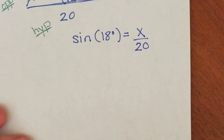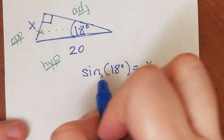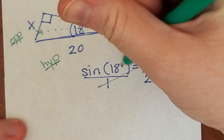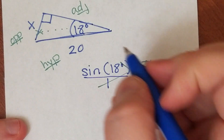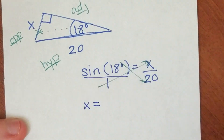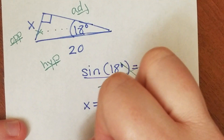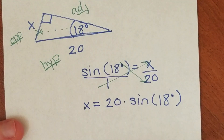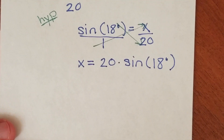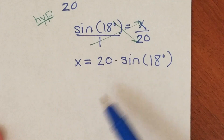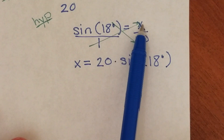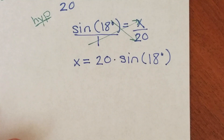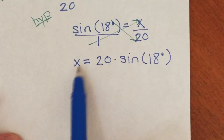I have to ask myself which trig function relates an angle to its opposite side and its hypotenuse. The answer is the sine function — I see opposite and hypotenuse, and in my problem I'm given the opposite side and the hypotenuse. So the sine of 18 degrees is equal to the opposite side, which is X, divided by the hypotenuse, which is 20. I'm going to turn this into a proportion and cross-multiply. I get: x equals 20 times the sine of 18 degrees. That's our exact answer.